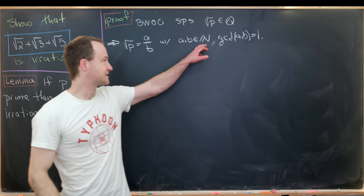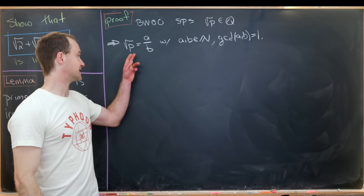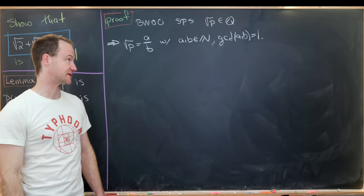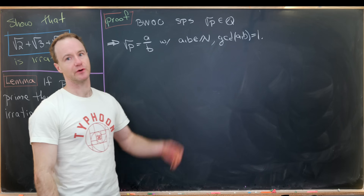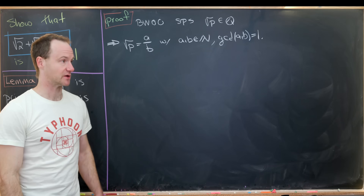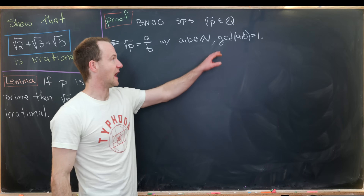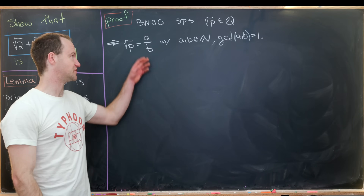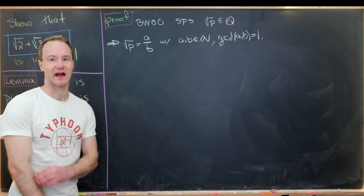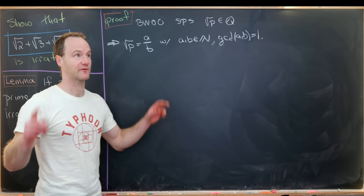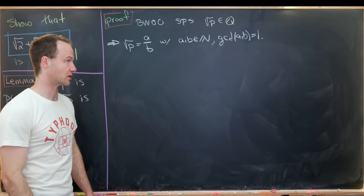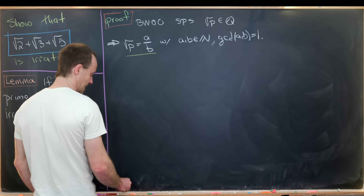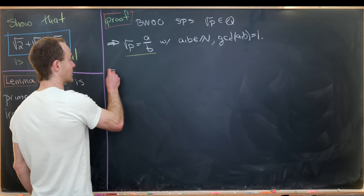We can assume these are natural numbers because the square root of p is a positive number, so we don't need a ratio of integers — we only need natural numbers. And we can assume they're relatively prime just by canceling out common factors until our fraction is in lowest terms. Now let's take this equation and square it.